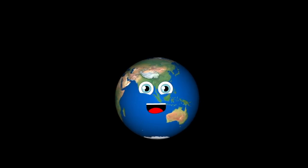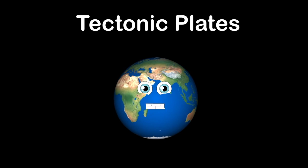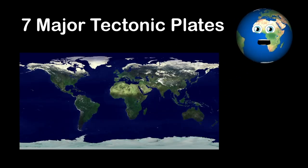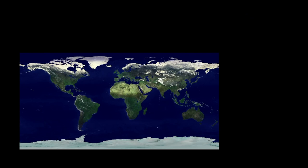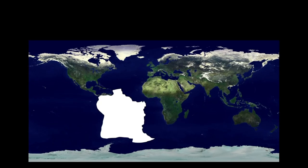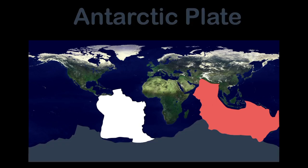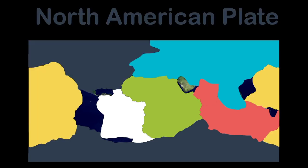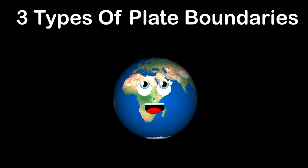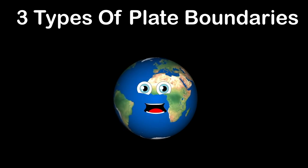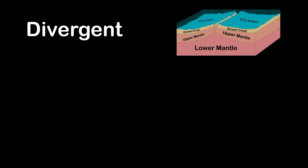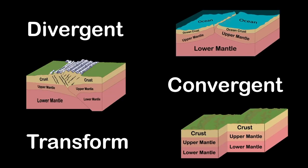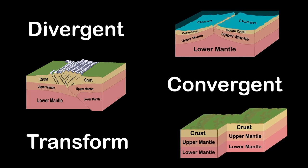Most earthquakes are found between tectonic plates. Seven major tectonic plates cover our earth: the South American, Indo-Australian, Antarctic, African, Eurasian, Pacific, and North American plates. There are three types of plate boundaries: divergent, convergent, and transform. They all cause earthquakes. Divergent boundaries move away from each other producing rift valleys, most active between oceanic plates. Convergent boundaries move towards one another — that's where you'll find most earthquakes and volcanoes. Transform boundaries are two plates that slide past one another; the San Andreas fault line is the best example.